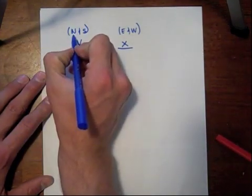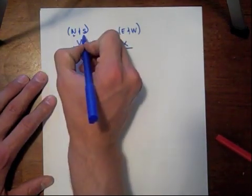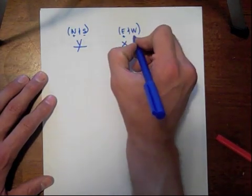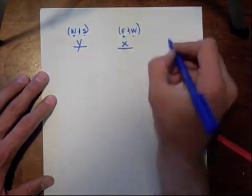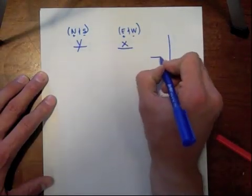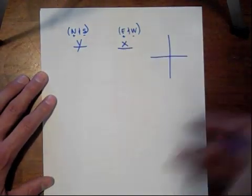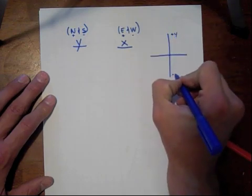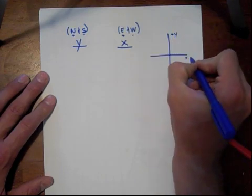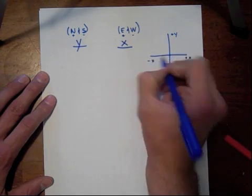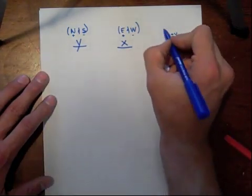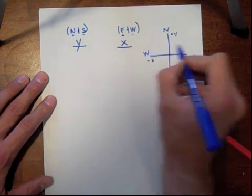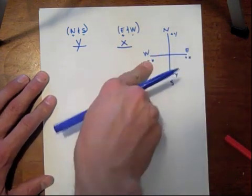Now, things that are north are going to be positive. Things that are south are going to be negative. Things that are east are going to be positive in the x direction, and things that are west are going to be negative in the x direction. If we look at an x, y coordinate, this stuff is positive y, this stuff is negative y, and then this is positive x, and this is negative x. Now, if we line up our compass directions along with that, we see that, for example, west is pointing in the negative x direction.